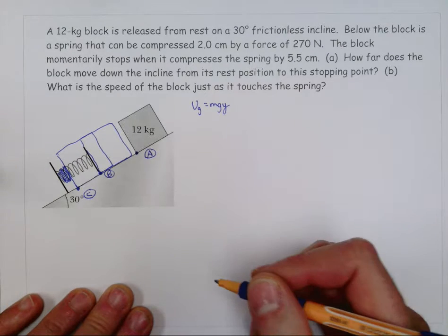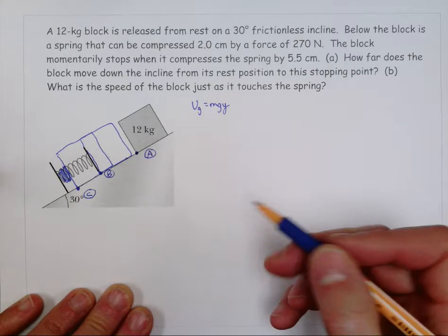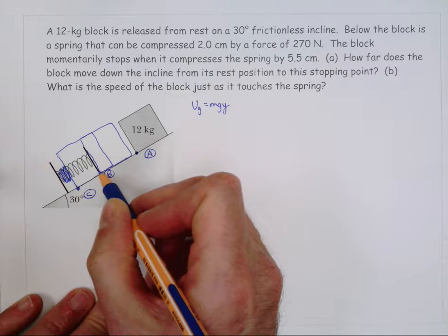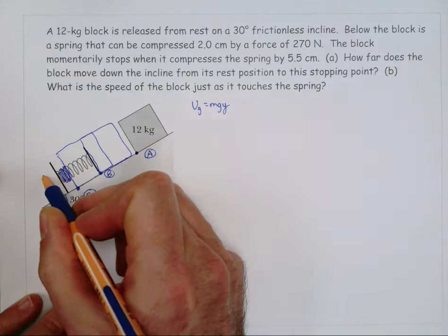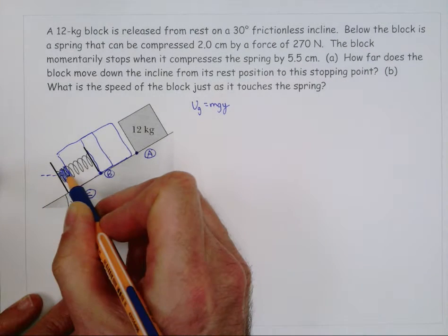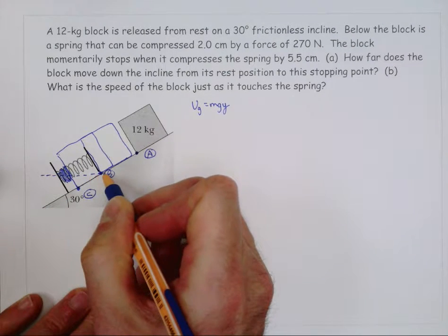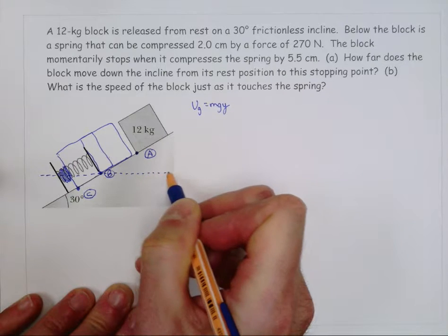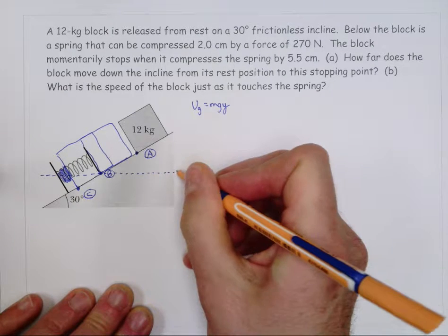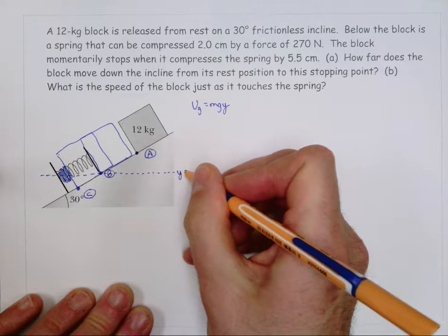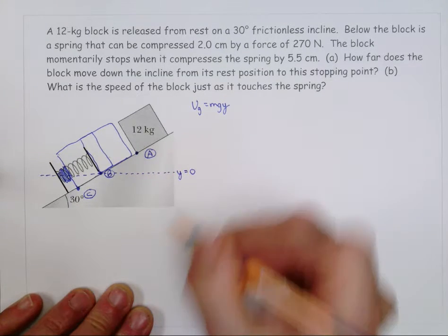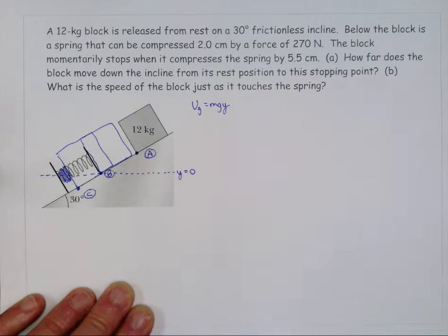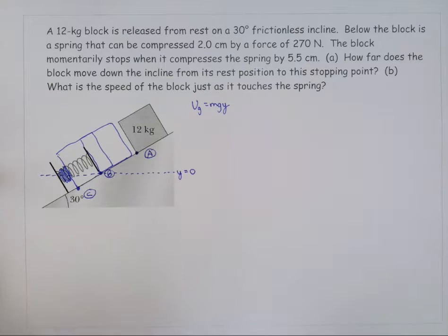Sometimes that works, sometimes it doesn't. Maybe that's what I'll do here. B is the location of the relaxed position of the spring, so I'm going to call that location y equals zero and we'll see how that helps. I might even want to change my mind as I get into this problem.